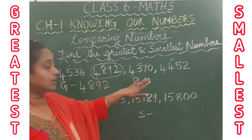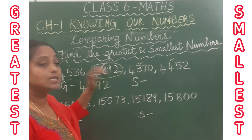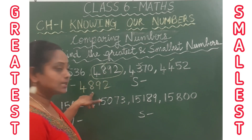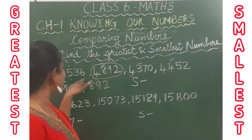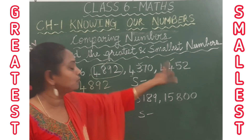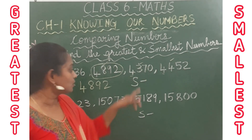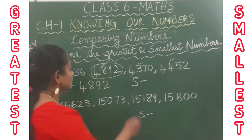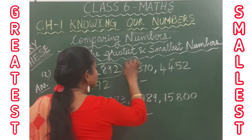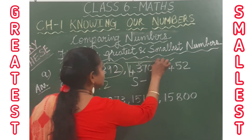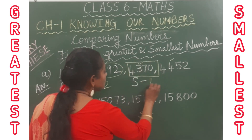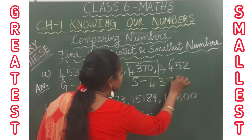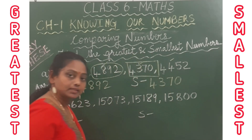Now we find the smallest number. Looking at the hundreds place digits — 5, 8, 3, 4 — the smallest digit is 3. So 4,370 is the smallest number.